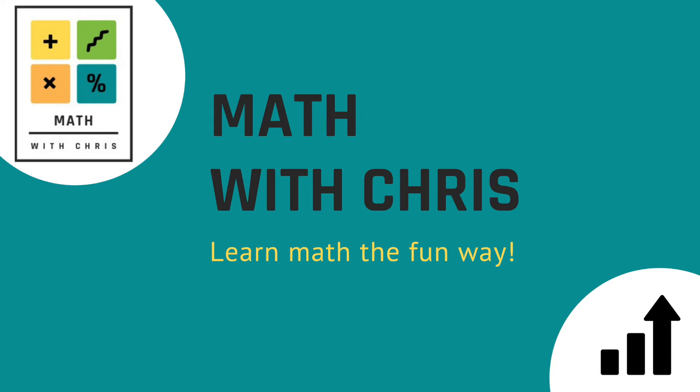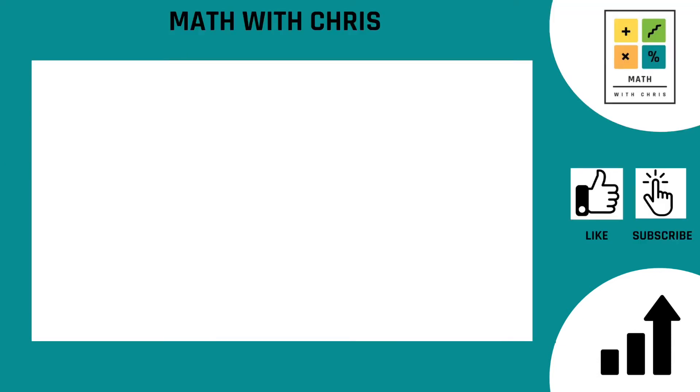What's up everybody? Math with Chris. Here we're going to be subtracting some fractions with different denominators. The denominator is the number on the bottom. In this example we're going to go with 4 fifths minus 3 fourths.